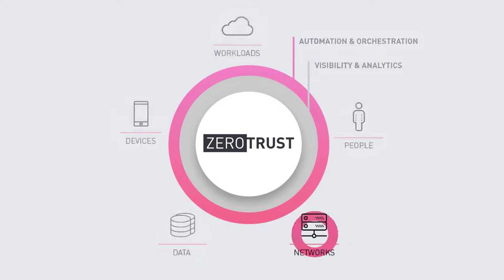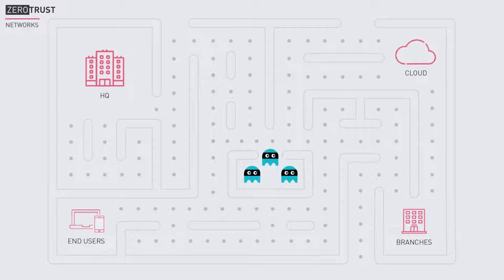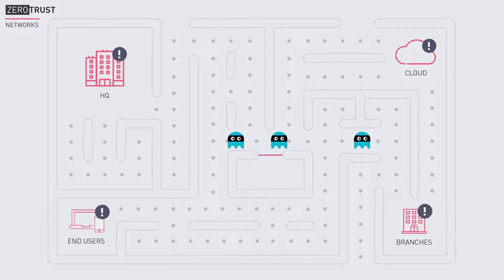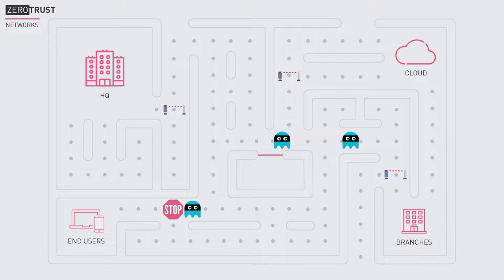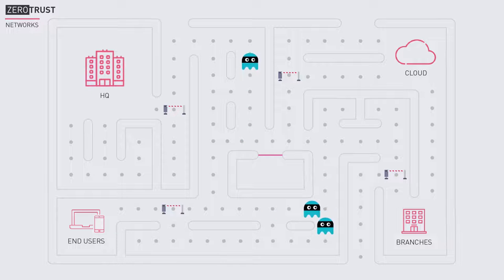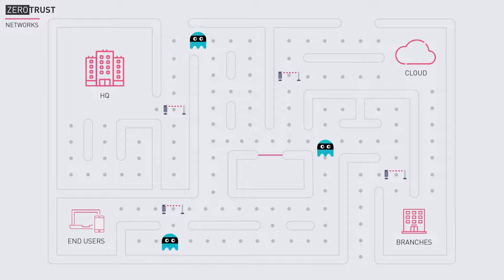Zero Trust Networks: When moving toward Zero Trust Security, it is crucial you divide and rule your network. Identifying your valuable assets and defining micro-segments around them create multiple junctions and inspection points that block malicious or unauthorized lateral movement, so that in the event of a breach, the threat is easily contained and isolated.